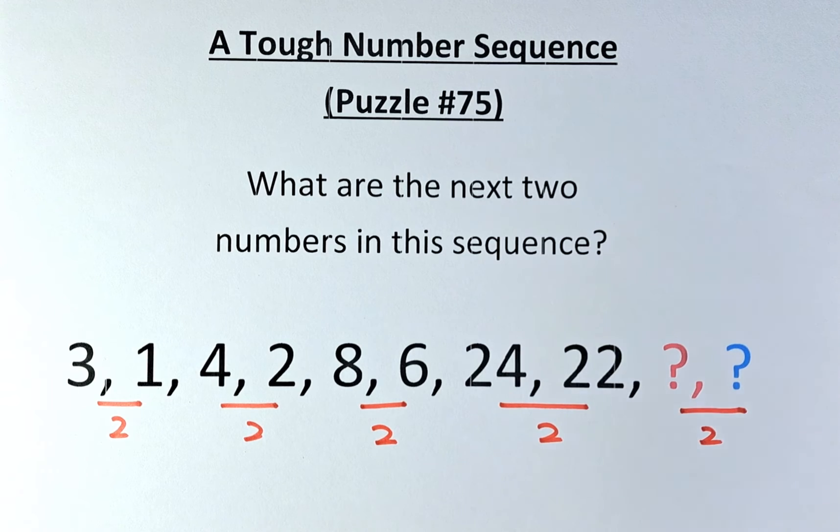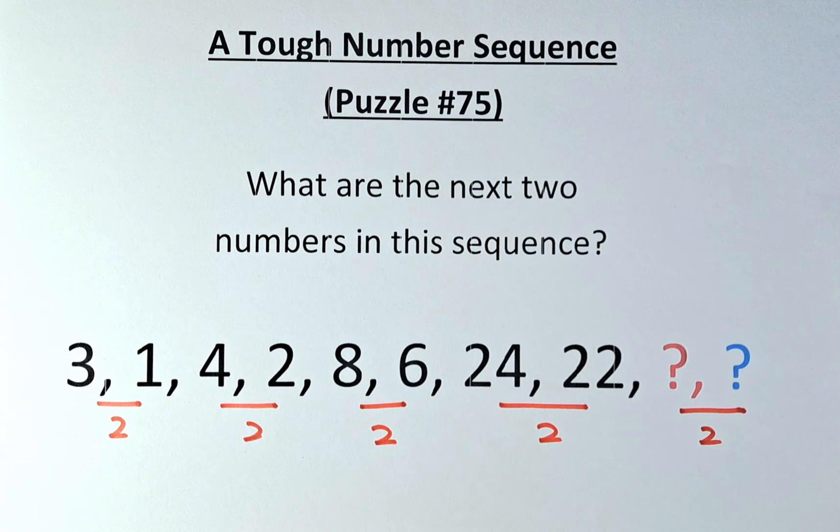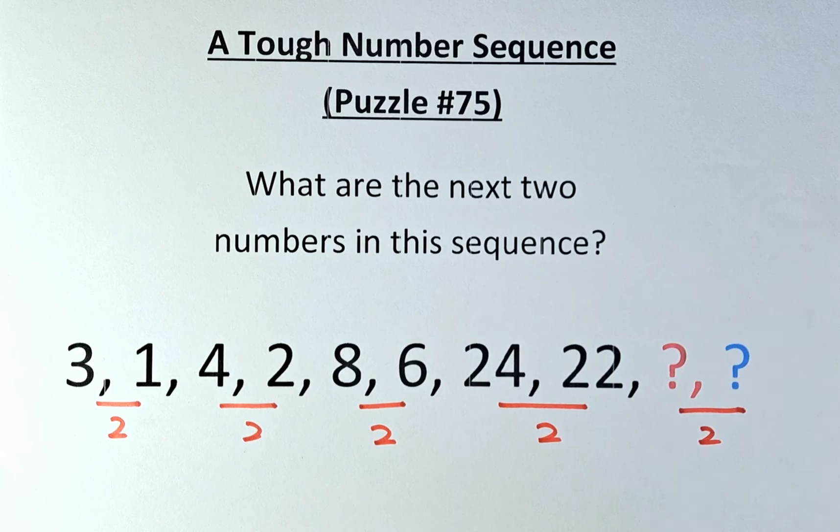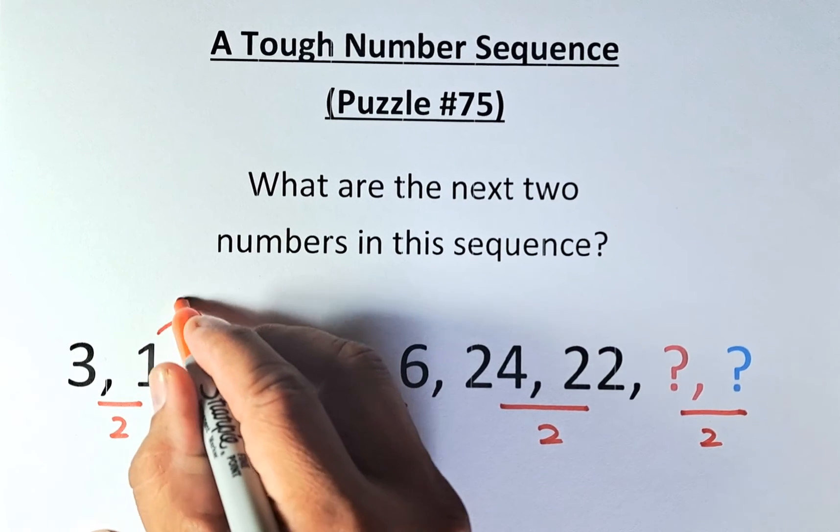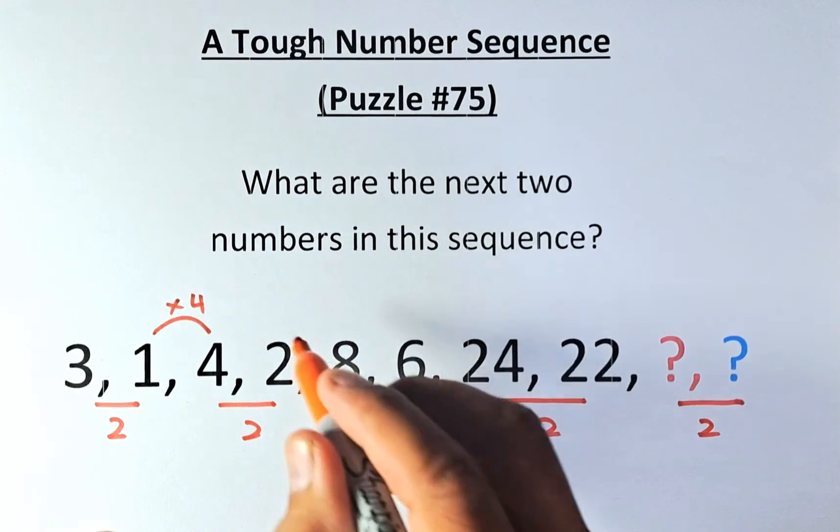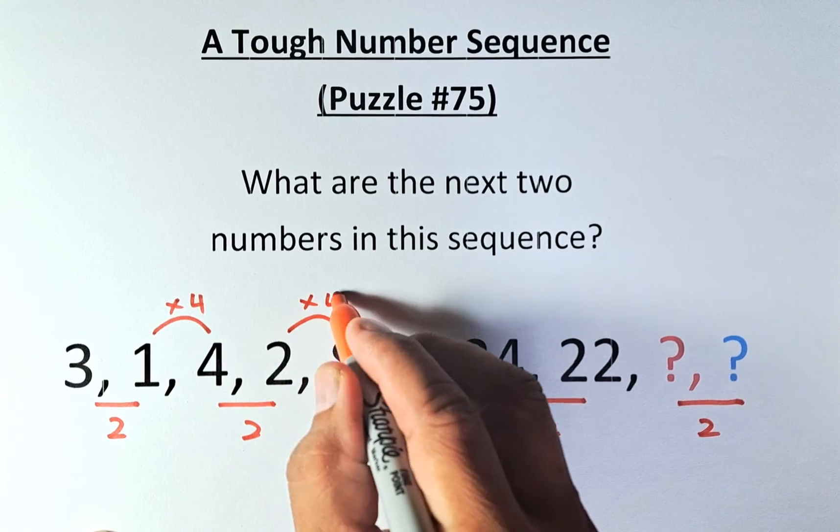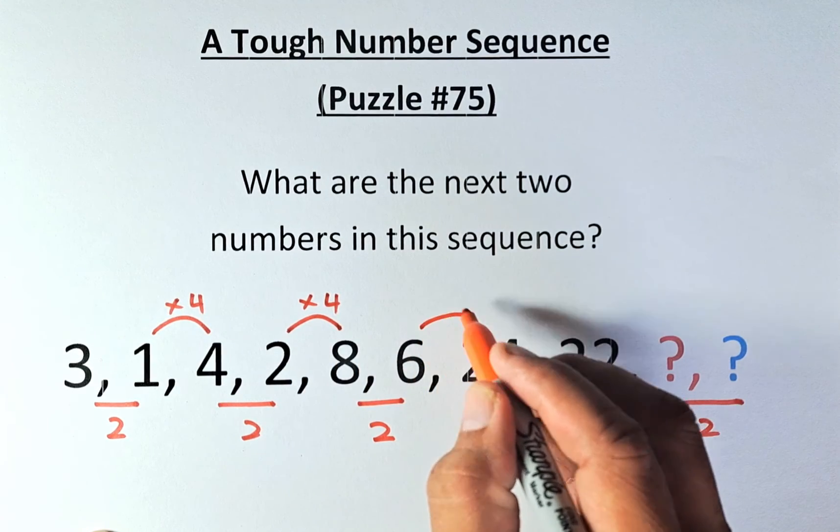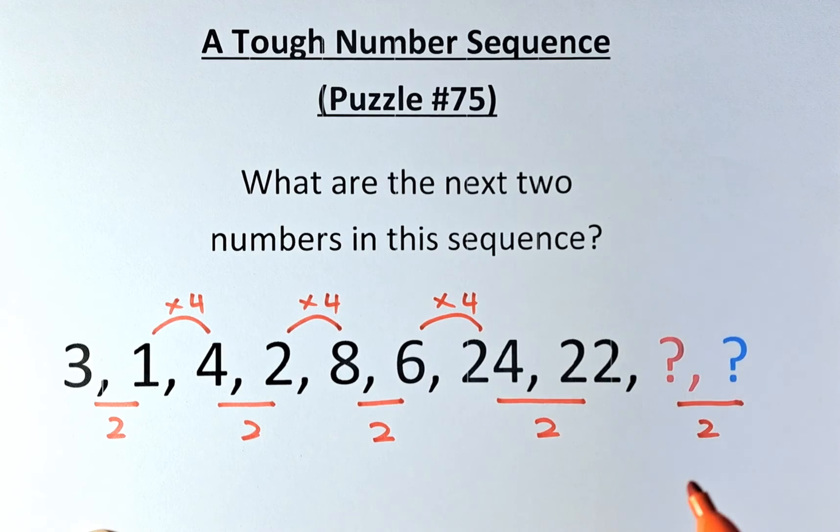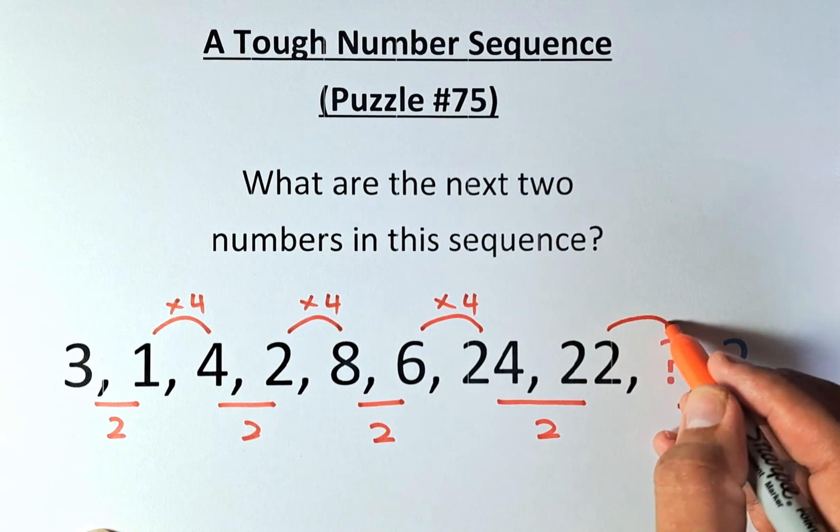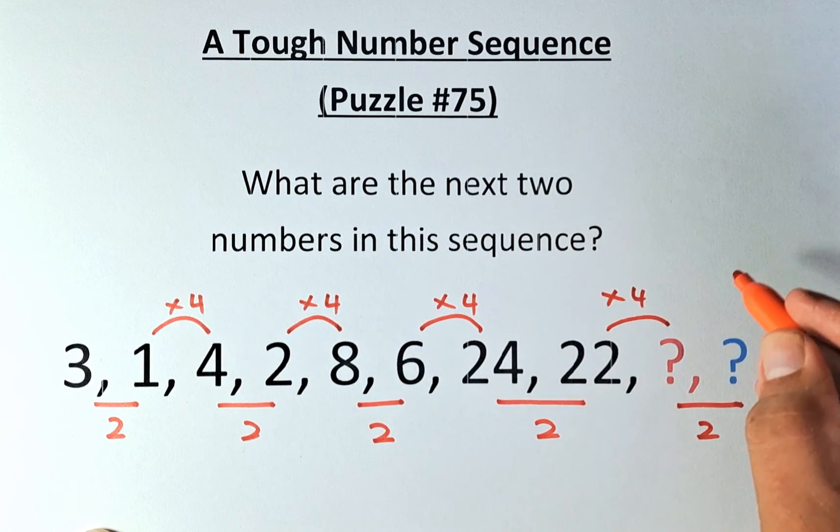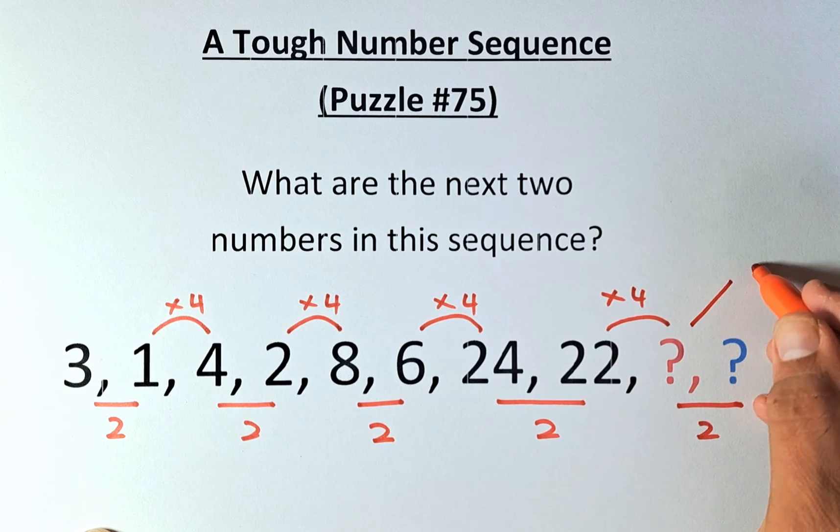Next, we need to find the first question mark, represented by the orange question mark. Looking at the pattern, 1 to 4 you multiply by 4, 2 to 8 is also multiplied by 4, 6 to 24 you multiply by 4, and 22 to the next number, 22 multiplied by 4 gives us 88 for the first question mark.